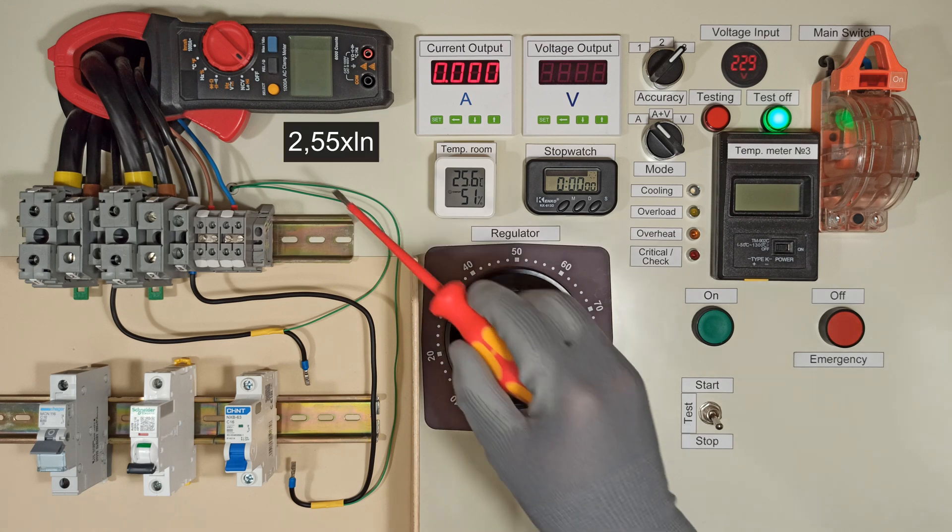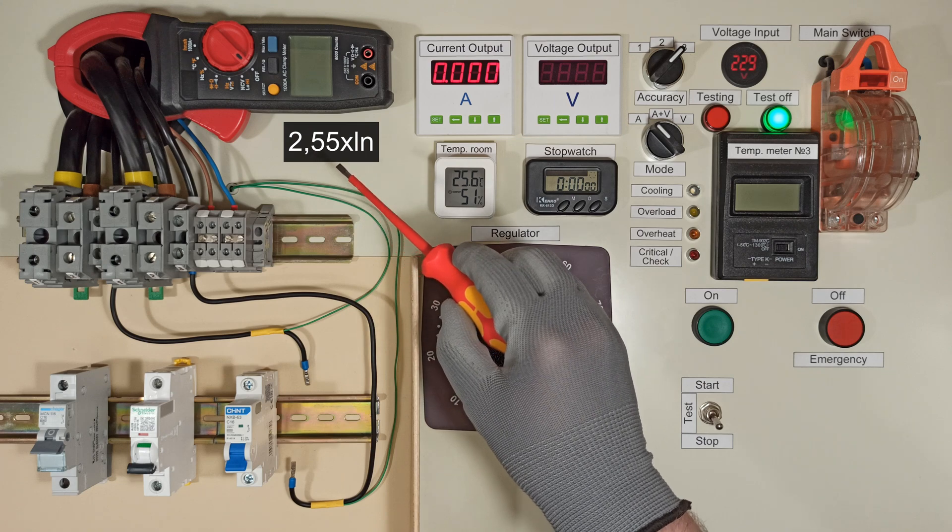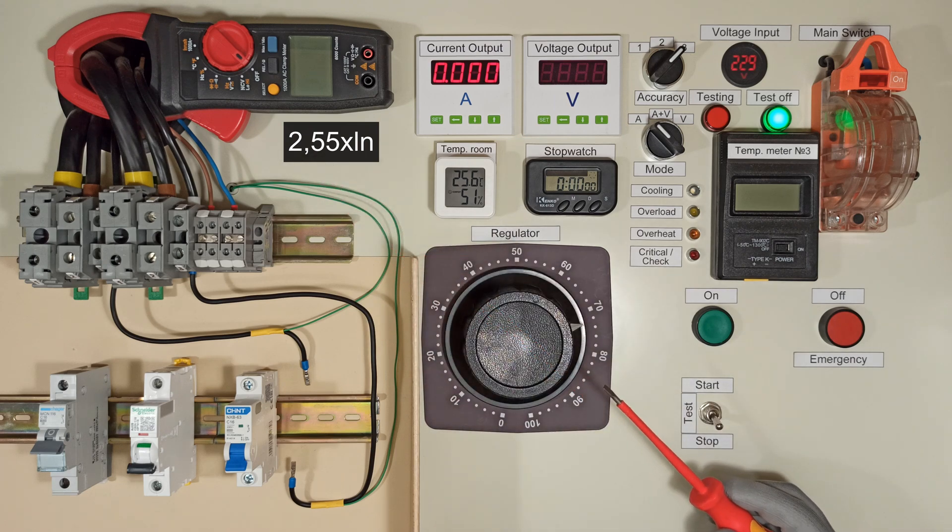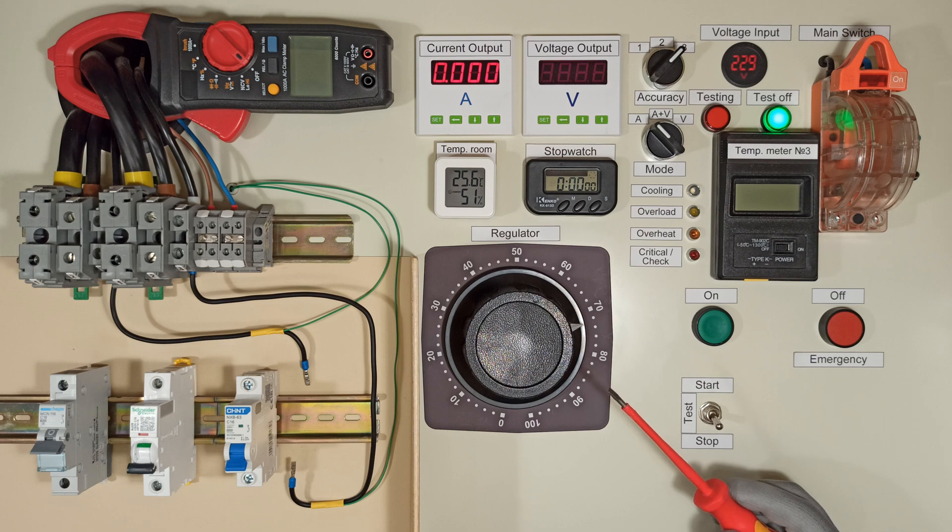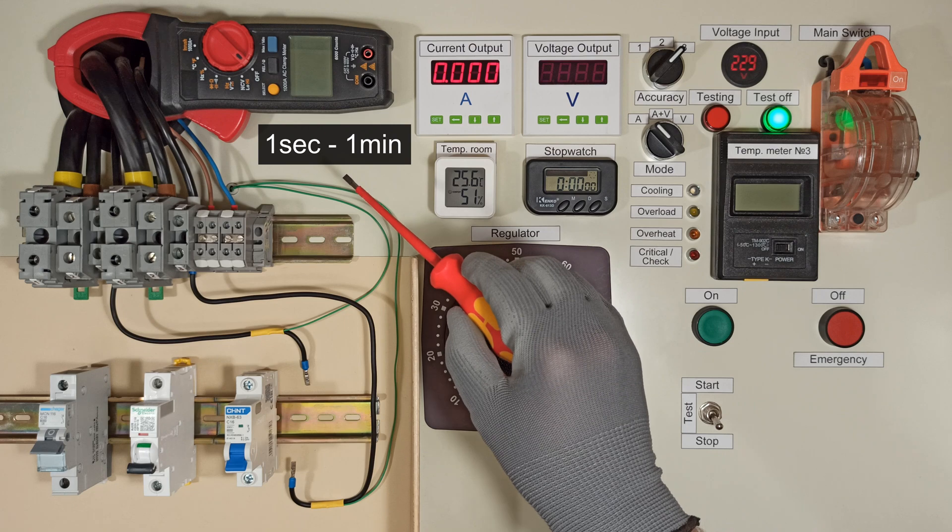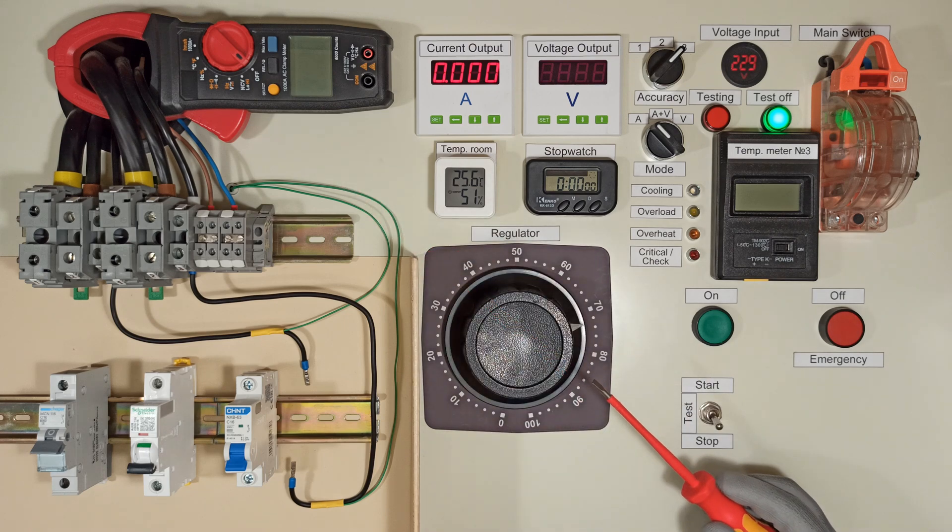When a current of 2.55 times IN is applied from a cold state, the circuit breaker should trip between 1 second and 1 minute.